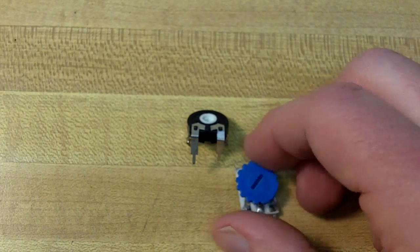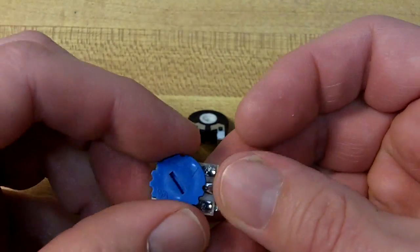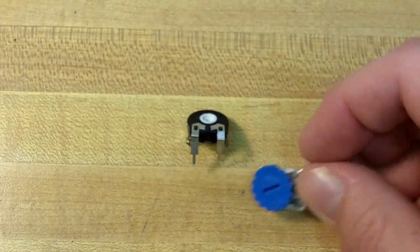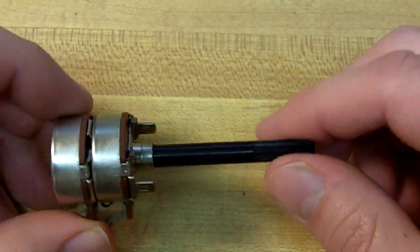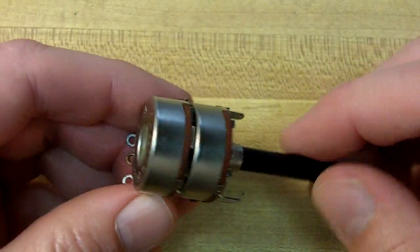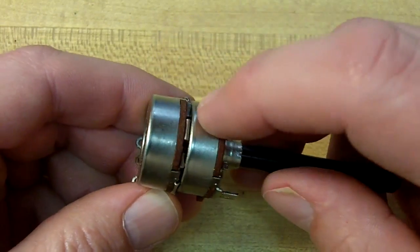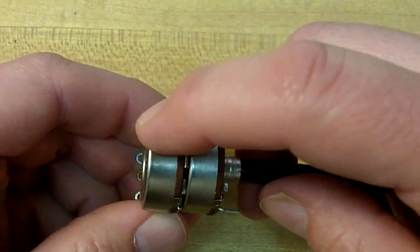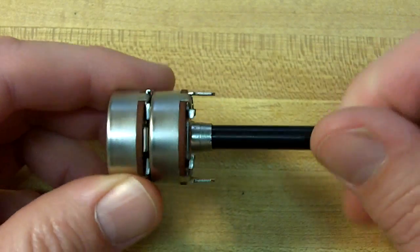There's circuit mount type variable resistors that are designed to be set one time and left there. Here's a stereo volume control. They call these potentiometers or pots for short, and this controls the left and right side of the audio system in a stereo.